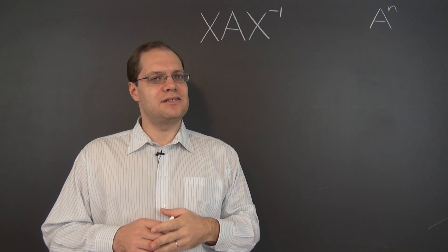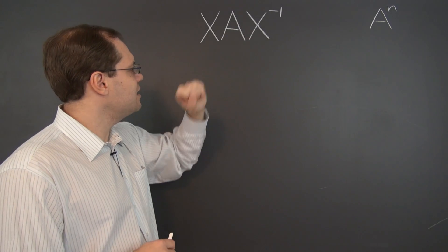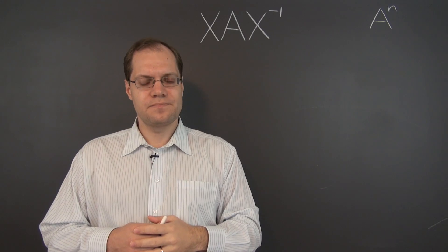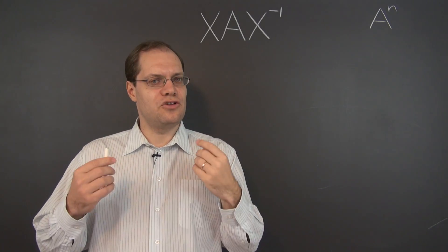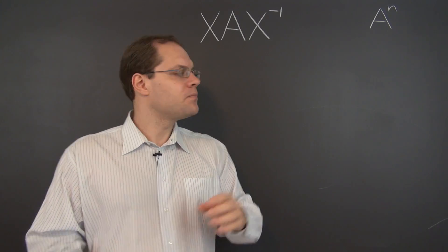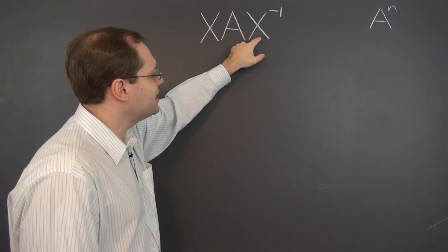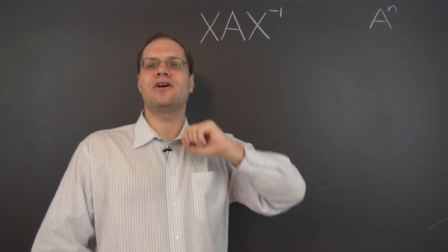So the starting point is the same. Consider matrix A, and suppose that we know all of its eigenvalues and all of its eigenvectors, and now pick an arbitrary invertible matrix X, and multiply A by X on the left and X inverse on the right, and that's our new matrix.